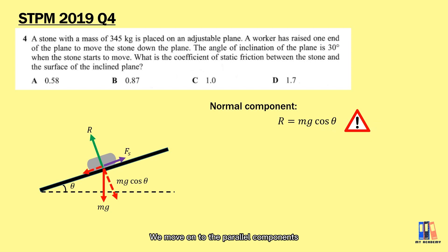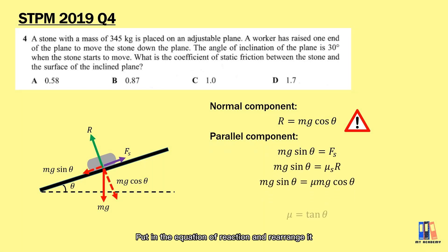We move on to the parallel components. Now we are considering the case where the force is in equilibrium, where the static friction is just overcome by the gravitational force. So we have the static friction which is μR equal to the parallel component of the weight mg sin θ. Putting in the equation of reaction and rearranging it, we have the coefficient equal to tan 30° which equals 0.58. Remember that we don't have units for the coefficient.